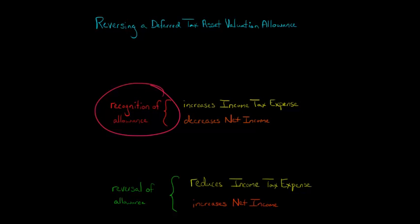When we recognize the allowance initially, it's going to increase income tax expense and decrease net income. So when we reverse the allowance, it's going to have the opposite effect. If we have already recognized a Valuation Allowance for $300,000 and then we reverse that entire allowance, it's going to reduce our income tax expense in that period and increase our net income. If some firm reverses the entire thing and says our outlook for the future is looking better, that's going to boost their profits by $300,000.